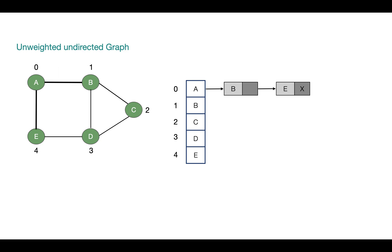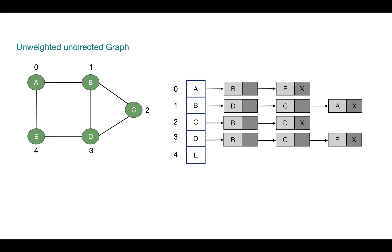Similarly, B is connected to A, D and C. So A, D and C are the adjacent vertices to B. So here we will be having a list with all these three vertices. Similarly, at index 2, now at index D and at index E. This is the representation for unweighted undirected graph.